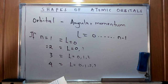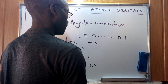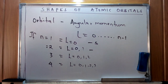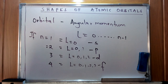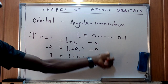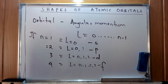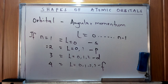When l equals zero this represents the s subshell, and the subsequent values represent p, d, and f subshells respectively. These are the atomic orbitals we mentioned. The magnetic quantum number describes the alignment of orbitals along the axis, and this gives us the number of orbitals for each subshell.